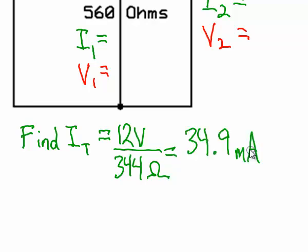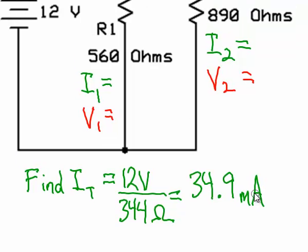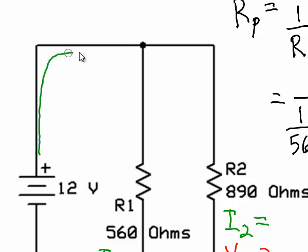Now that's going to be the total current in the circuit. But remember that current flows this direction until it gets to this branching point, and then some of the current will flow through the first branch, and some of the current flows through the second branch. How do we determine how much current flows in each branch?